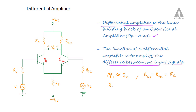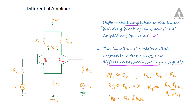Since RE1 equals RE2, the parallel combination of RE1 and RE2 simplifies. RE1 parallel RE2 equals RE divided by RE1 plus RE2, so RE1 parallel RE2 is equal to RE/2. Therefore, we can replace the parallel combination with a single equivalent emitter resistance RE.